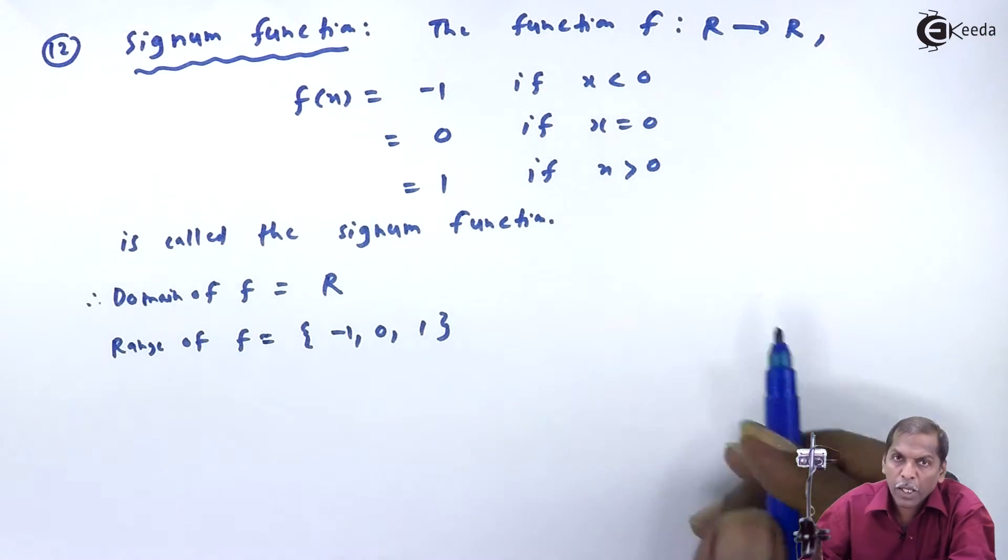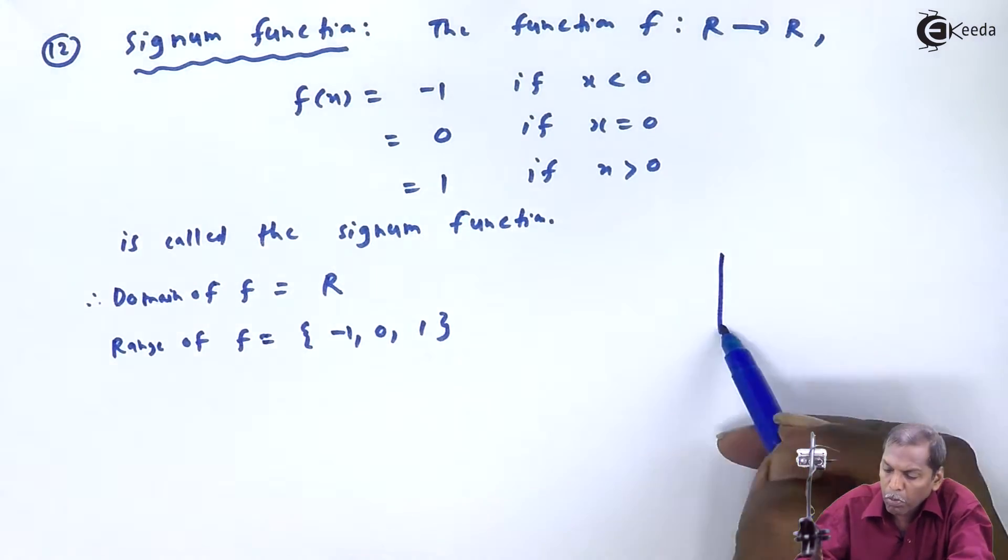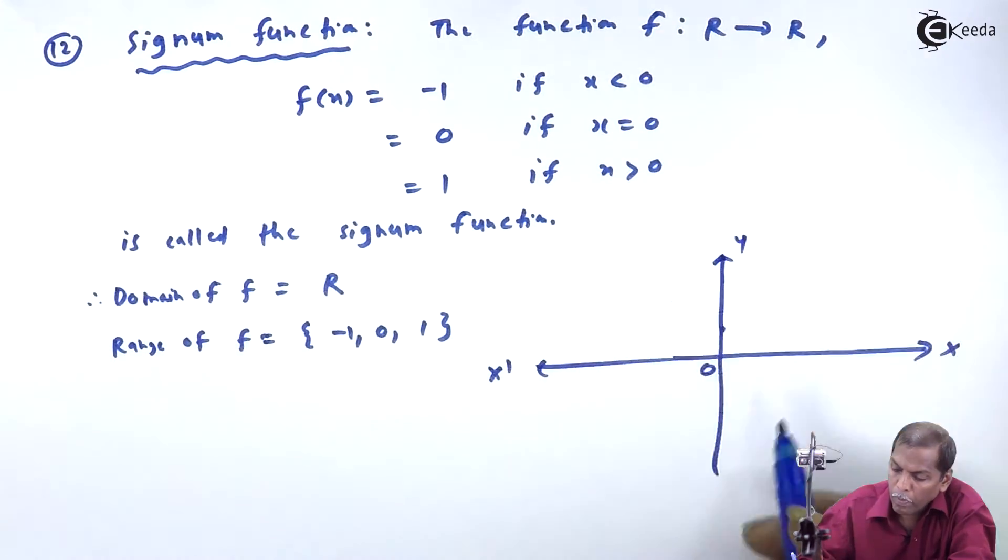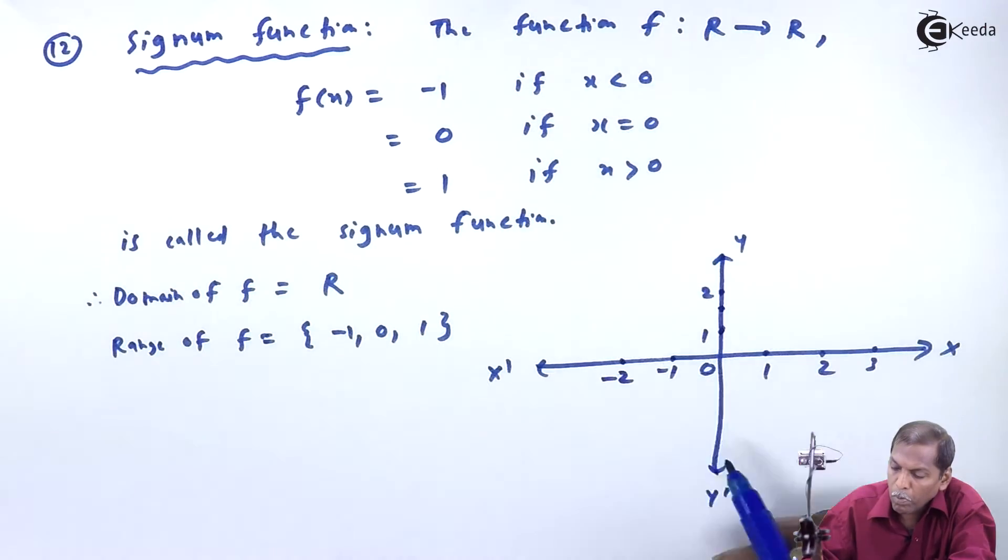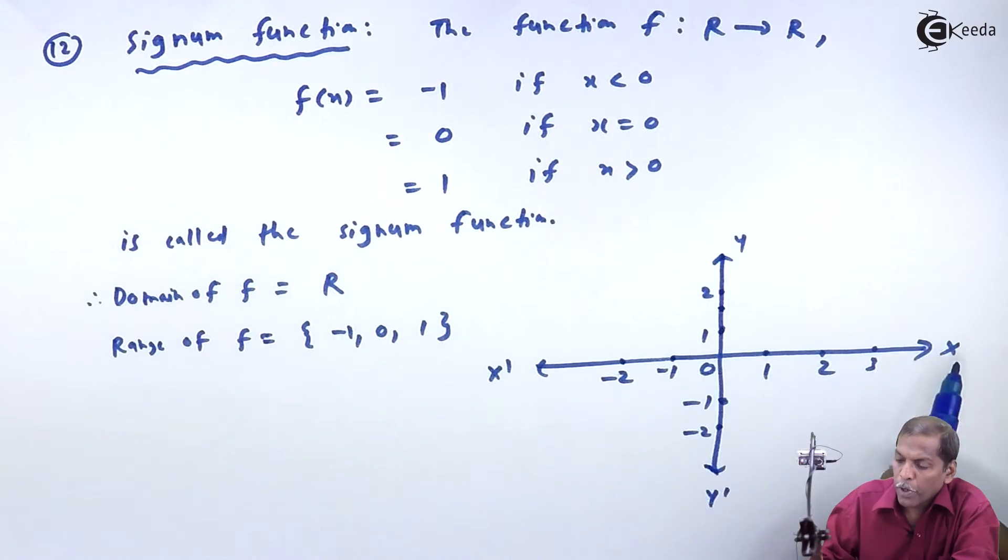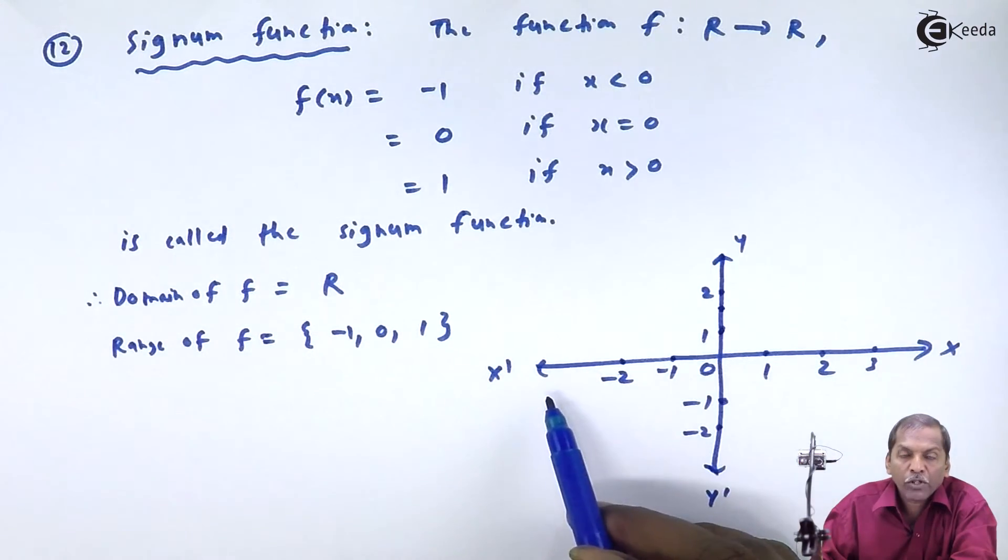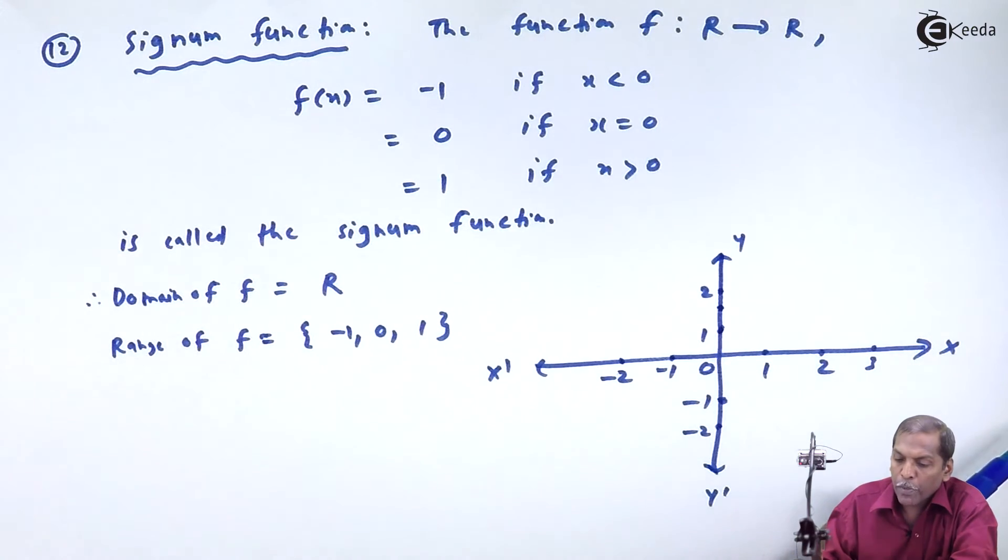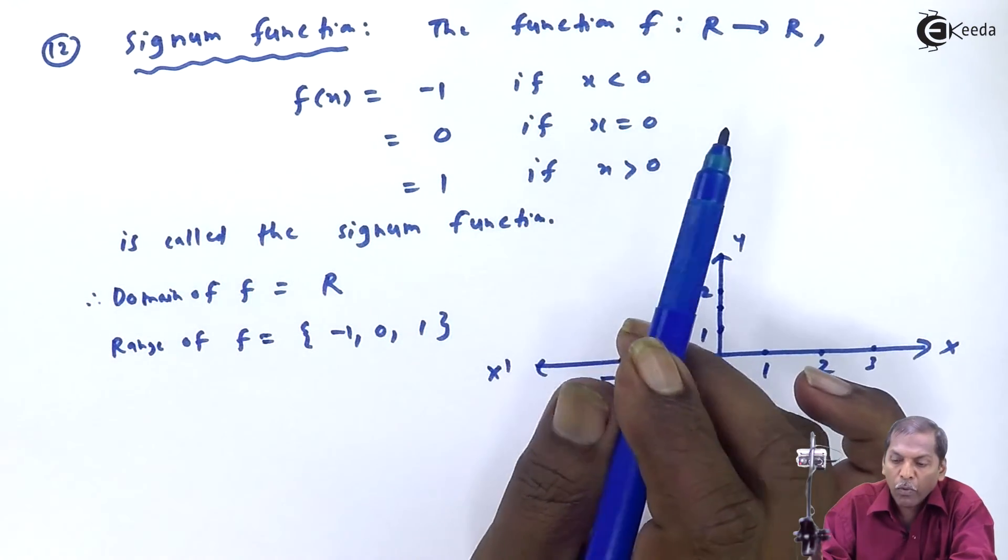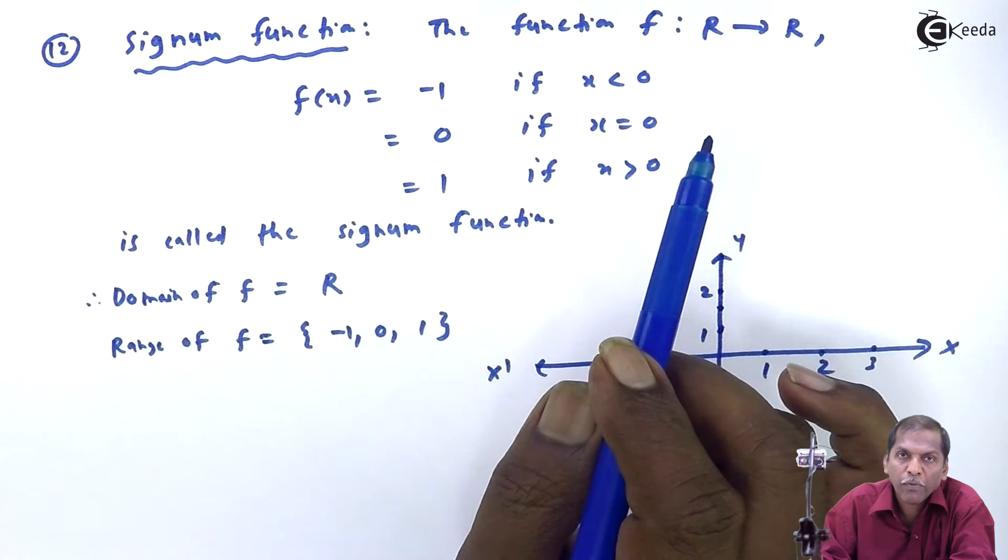its graph looks like... So here, x, O, x' represents the x-axis, and y, O, y' represents the y-axis. And the first value here is y = -1,